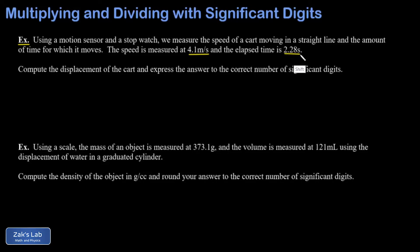We want the displacement of the cart and then we want to express the answer to the correct number of sig figs. So there's a little bit of extra background to this problem: we have to use the formula distance equals rate times time, or more in the style of physics we could write displacement equals velocity times time. So then we're going to compute the product of 4.1 meters per second and 2.28 seconds.